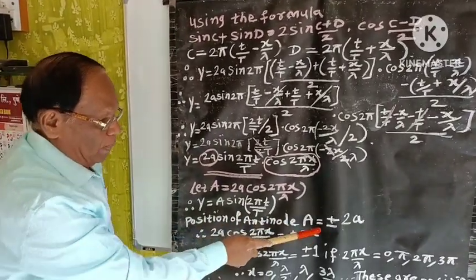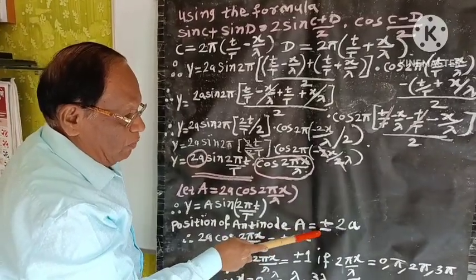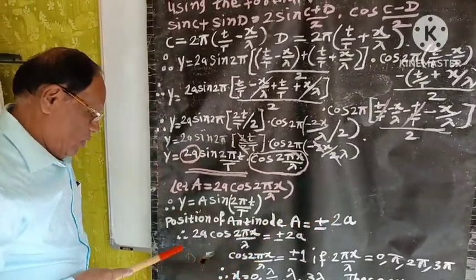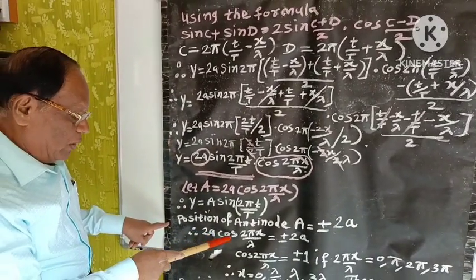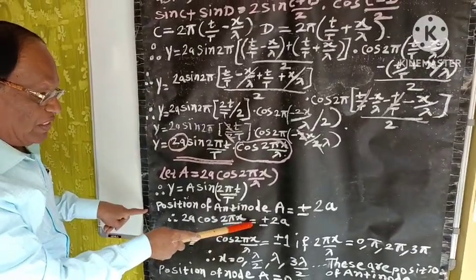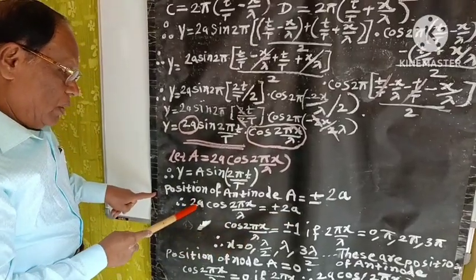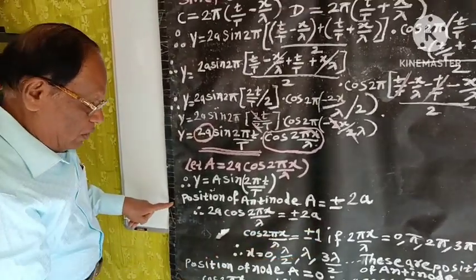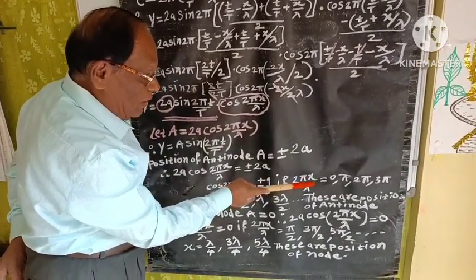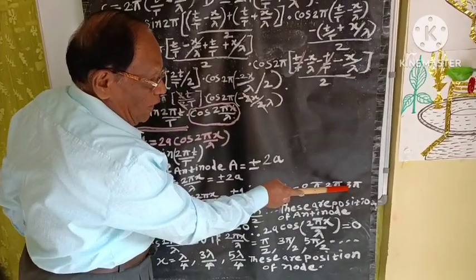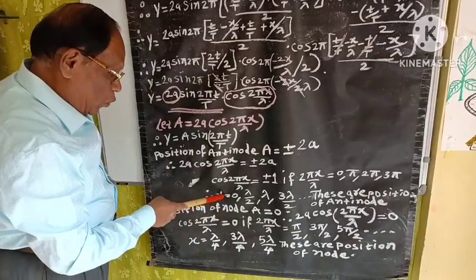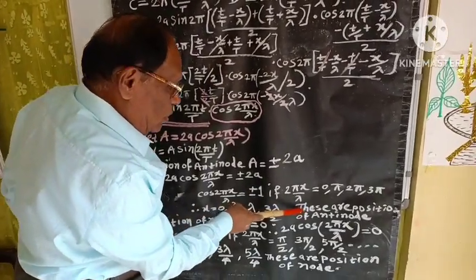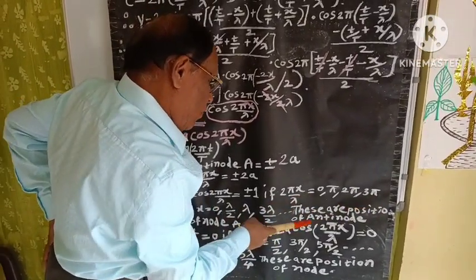Position of antinode: amplitude A = ±2a. Antinodes are formed where amplitude is maximum. Therefore, 2a cos (2πx/λ) = ±2a, which gives cos (2πx/λ) = ±1. If 2πx/λ = 0, π, 2π, 3π, and so on, then x = 0, λ/2, λ, 3λ/2, and so on. These are the positions of antinodes.